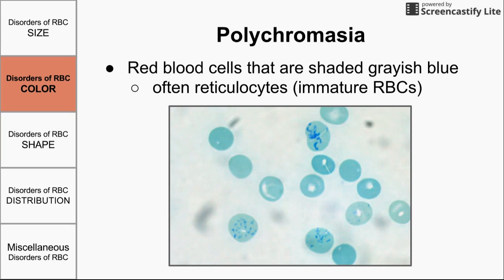Polychromasia means multiple colors — it's when we see red blood cells of multiple or unusual colors. The most commonly seen are red blood cells shaded grayish-blue. These grayish-blue red blood cells are often reticulocytes, which are the precursors to red blood cells — essentially immature red blood cells. When we have polychromasia, we usually see these grayish-blue reticulocytes.